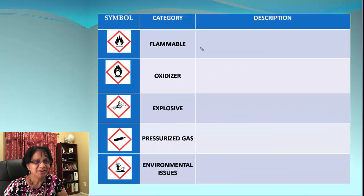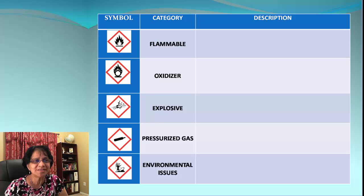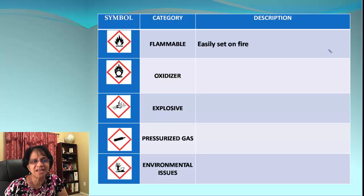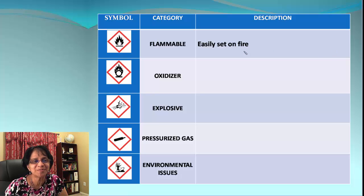Moving on. Look at the GHS symbol — very clear, that's a flame. That's called a flammable substance, meaning it can easily catch fire. So the bottom line is you're not going to keep a flammable substance close to a Bunsen burner or a hot plate.